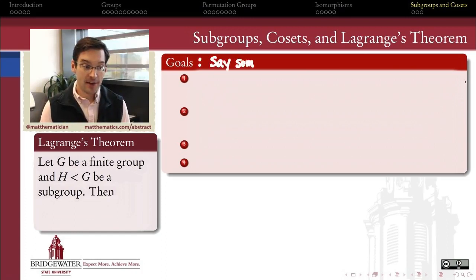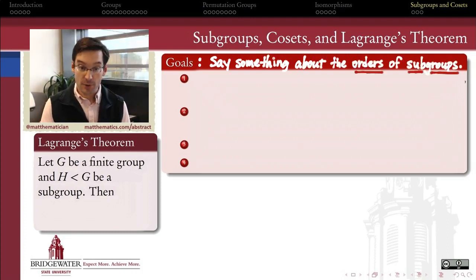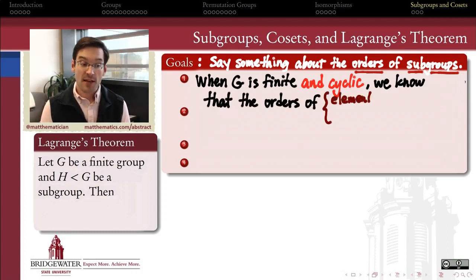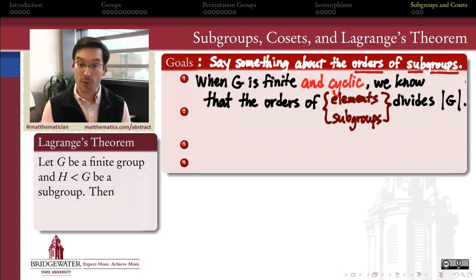The goal is to say something about the orders of subgroups in a finite group. We know a little something about the answer to this question. For example, when a group is finite and cyclic, we had a series of results several chapters ago that said the orders of all the elements and subgroups divide the order of the group.